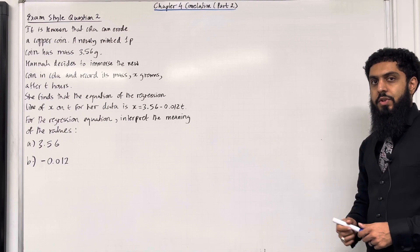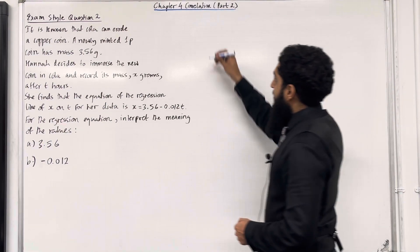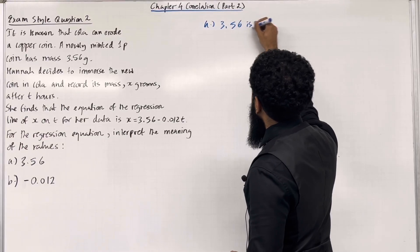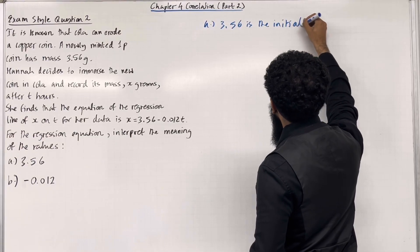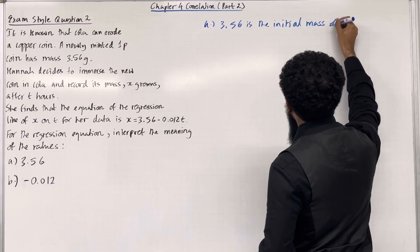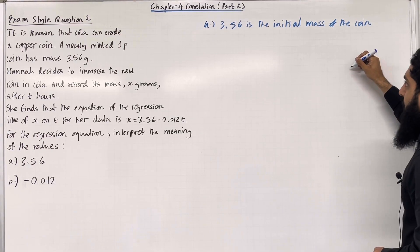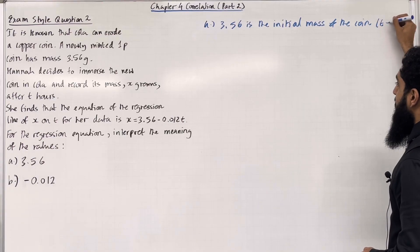Let's have a look at the solution to part A. 3.56 is the initial mass of the coin. It is basically the mass of the coin when t = 0.